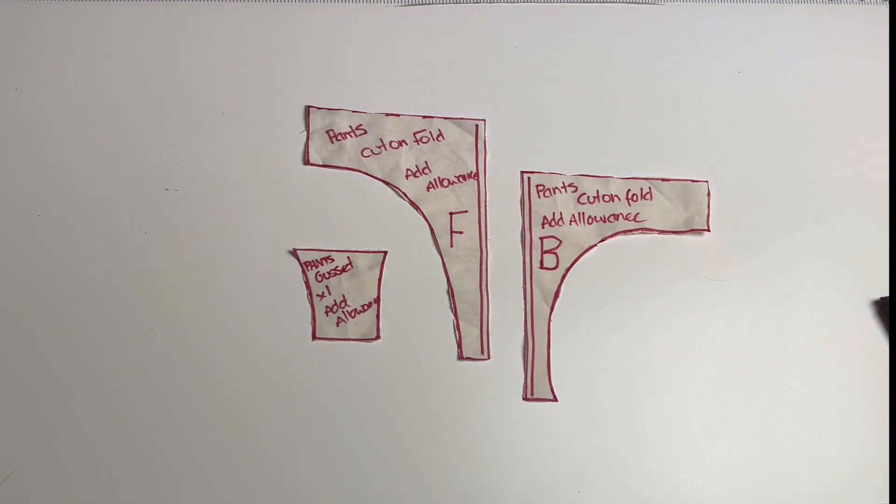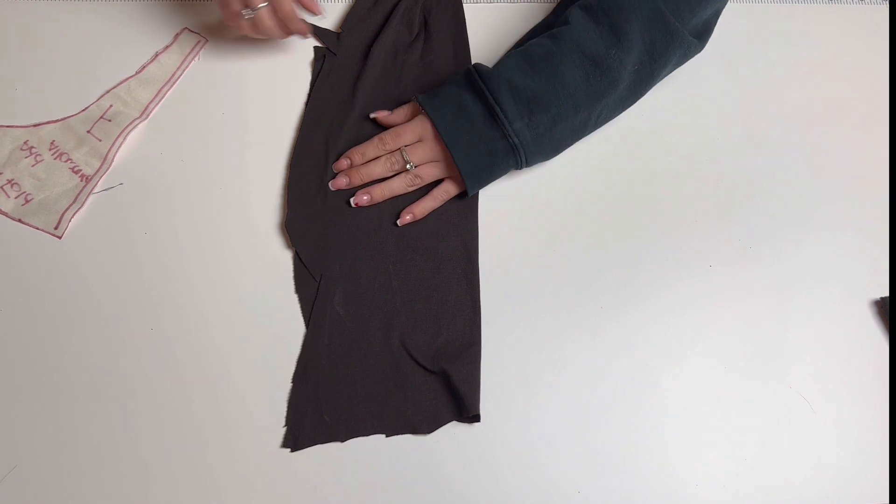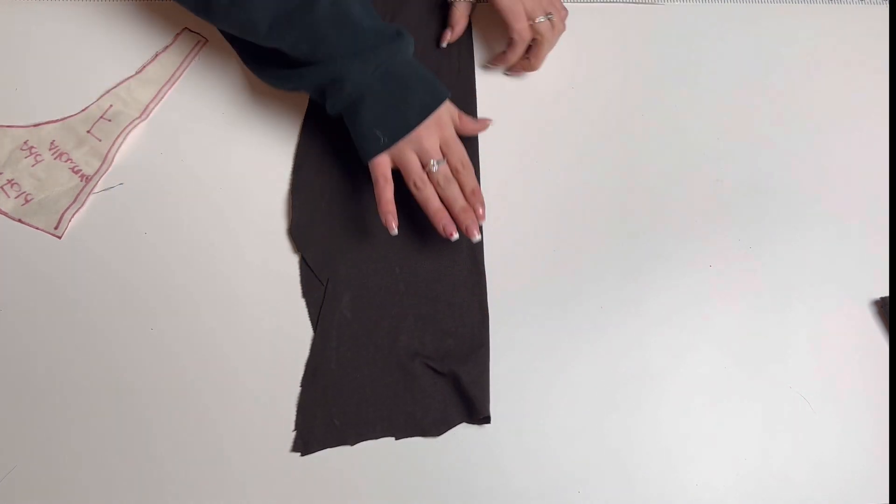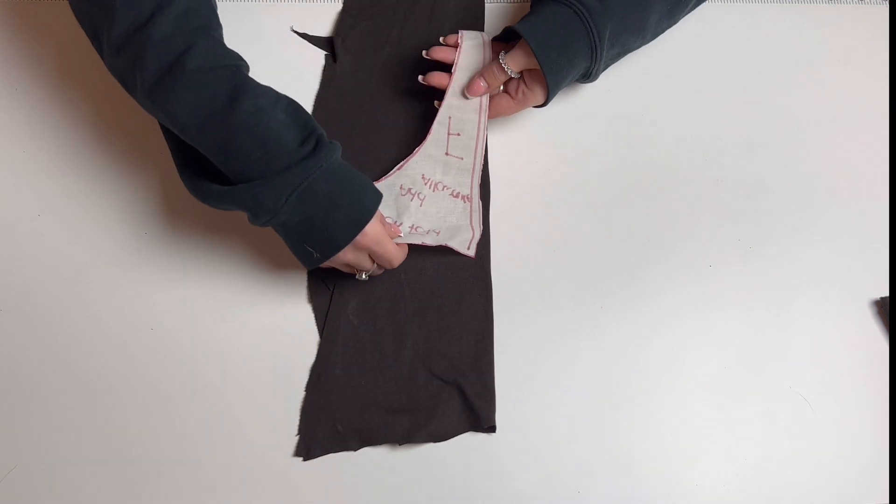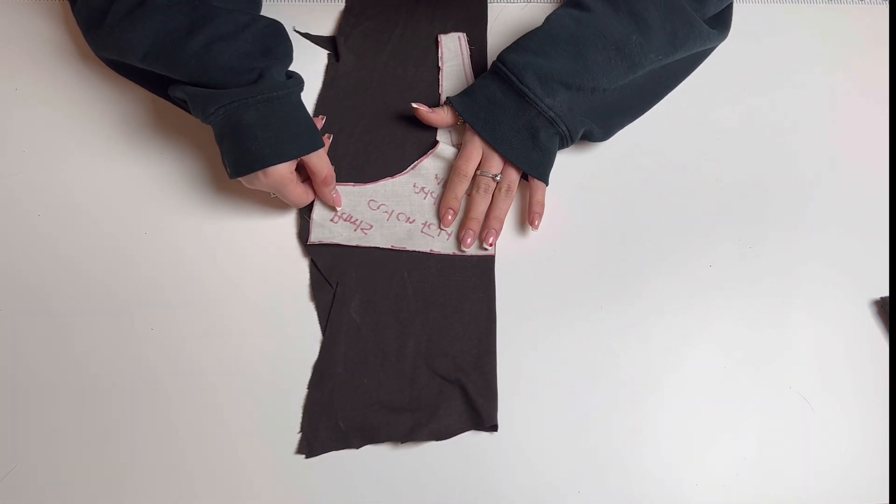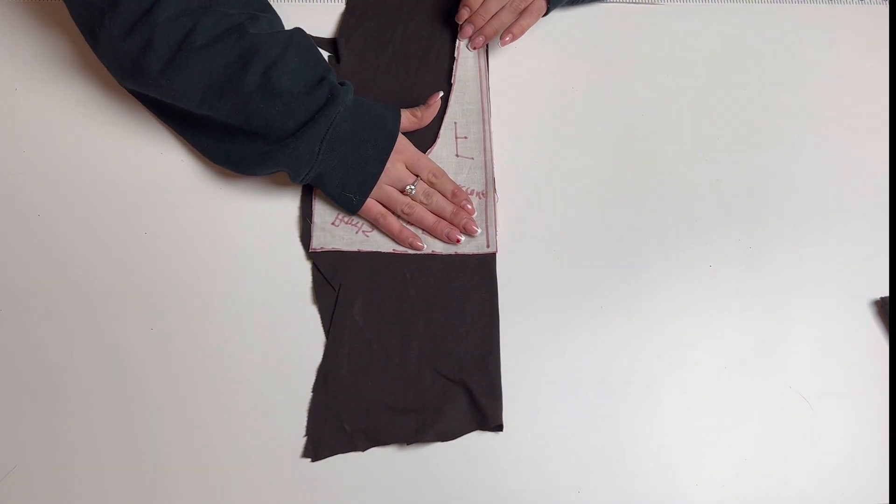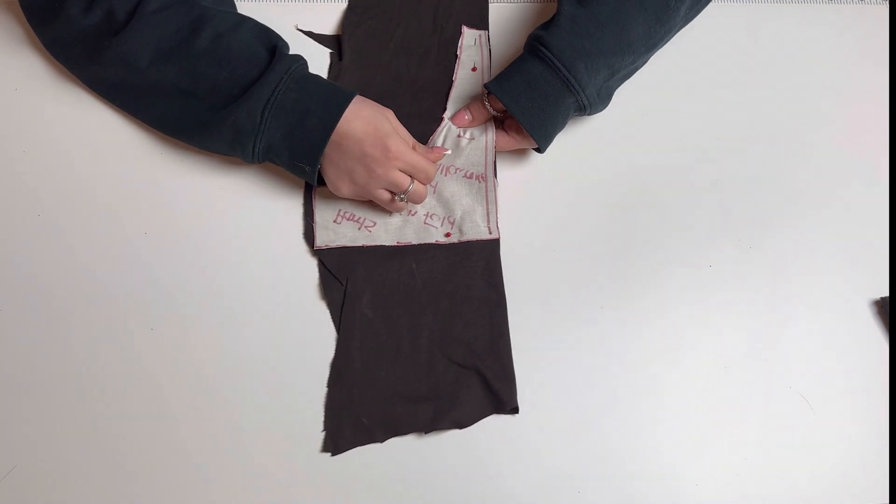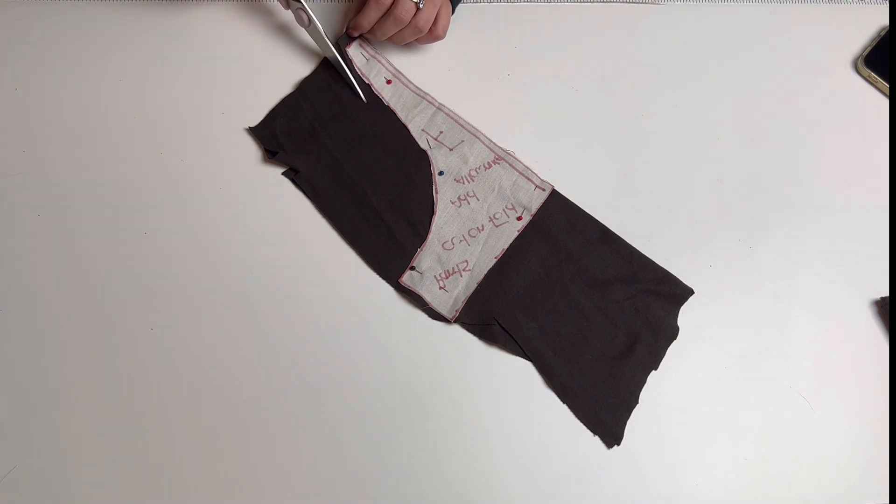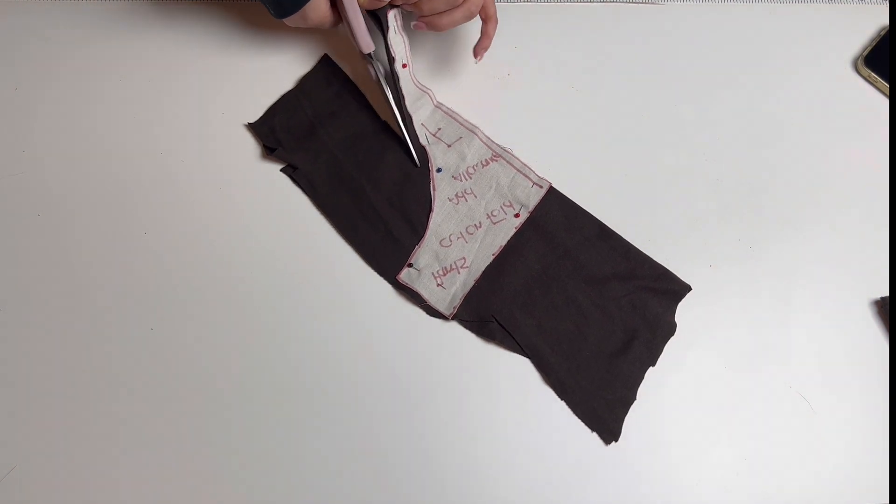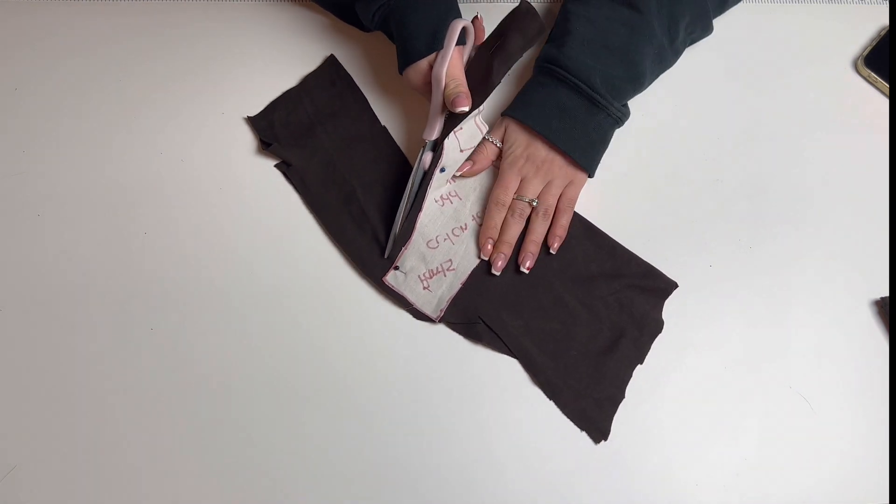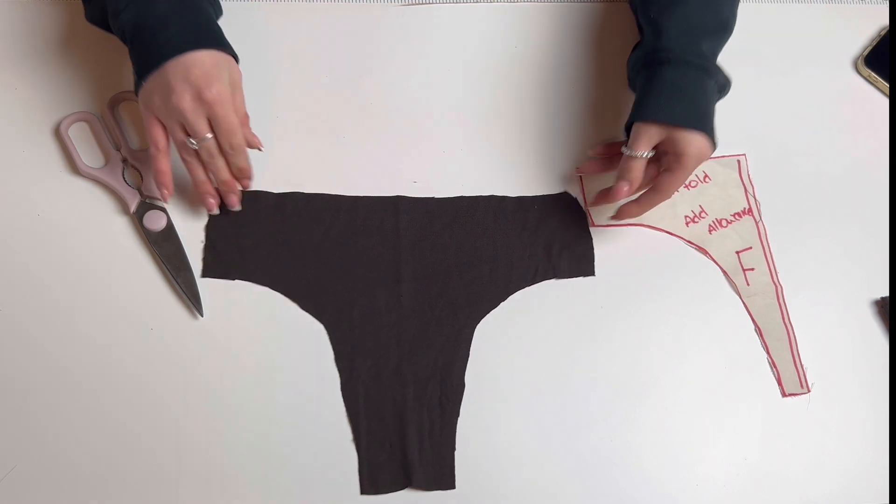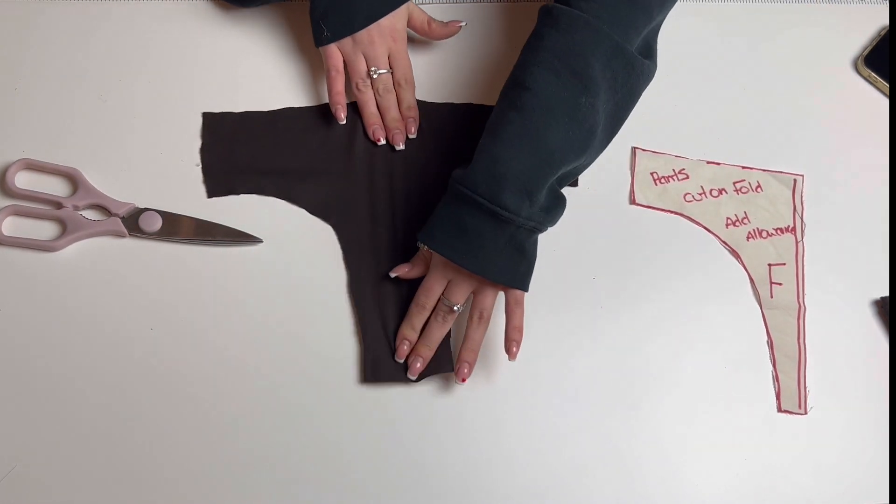Now you want to cut out your pieces for your pants. Take your fabric and fold it in half, making sure the fold of your fabric matches the fold on your pattern. Pin your pattern to your fabric and cut out using the same seam allowance. And now we have our front piece. Take the exact same steps to do the back and the gusset.